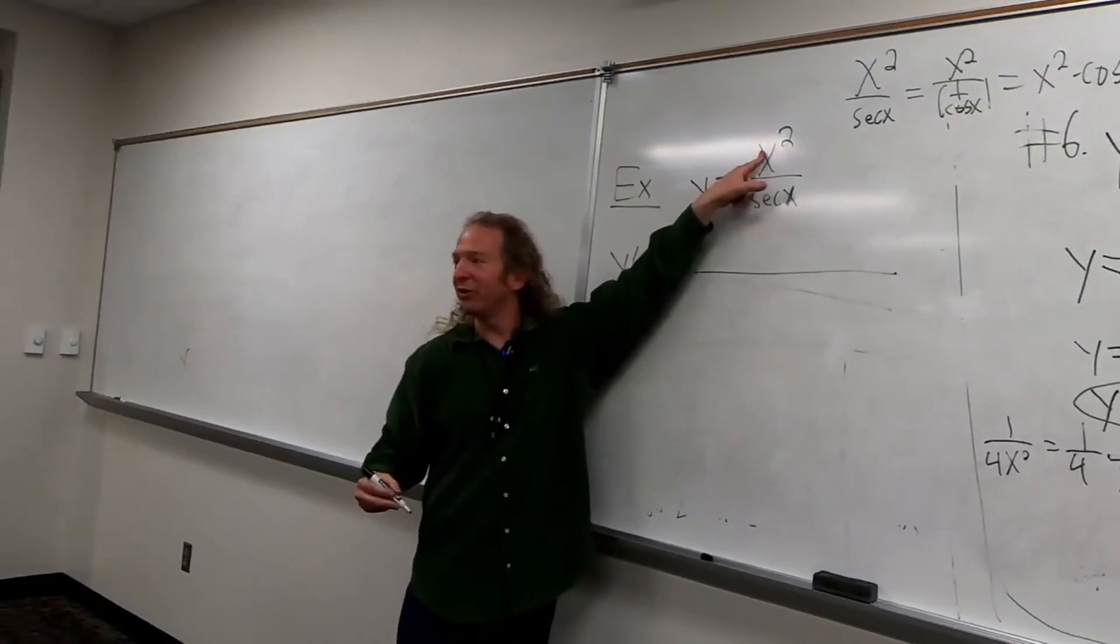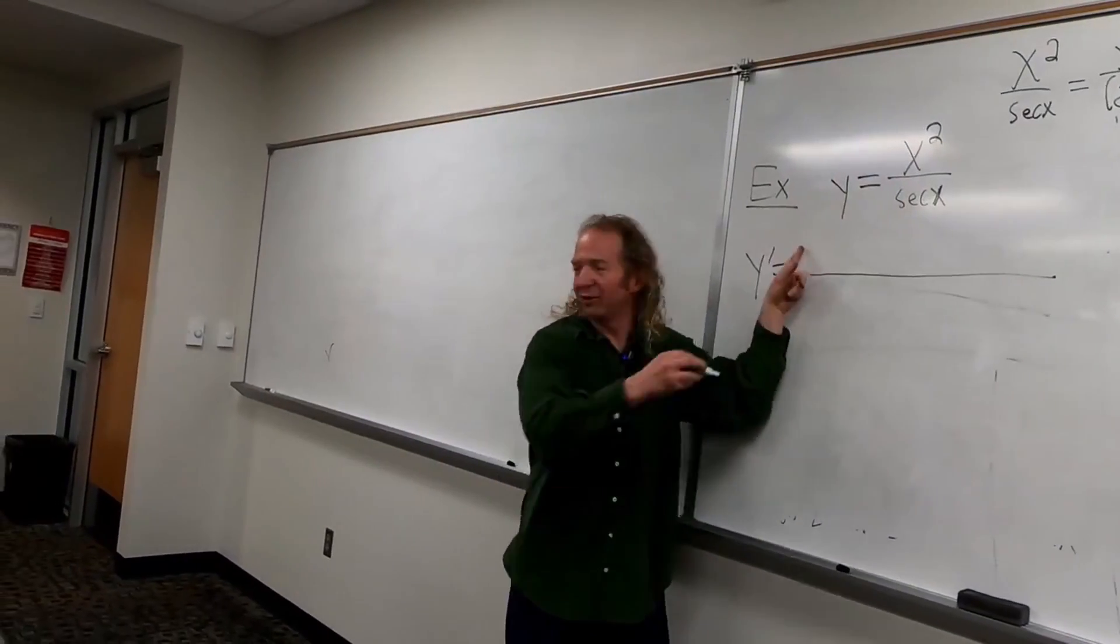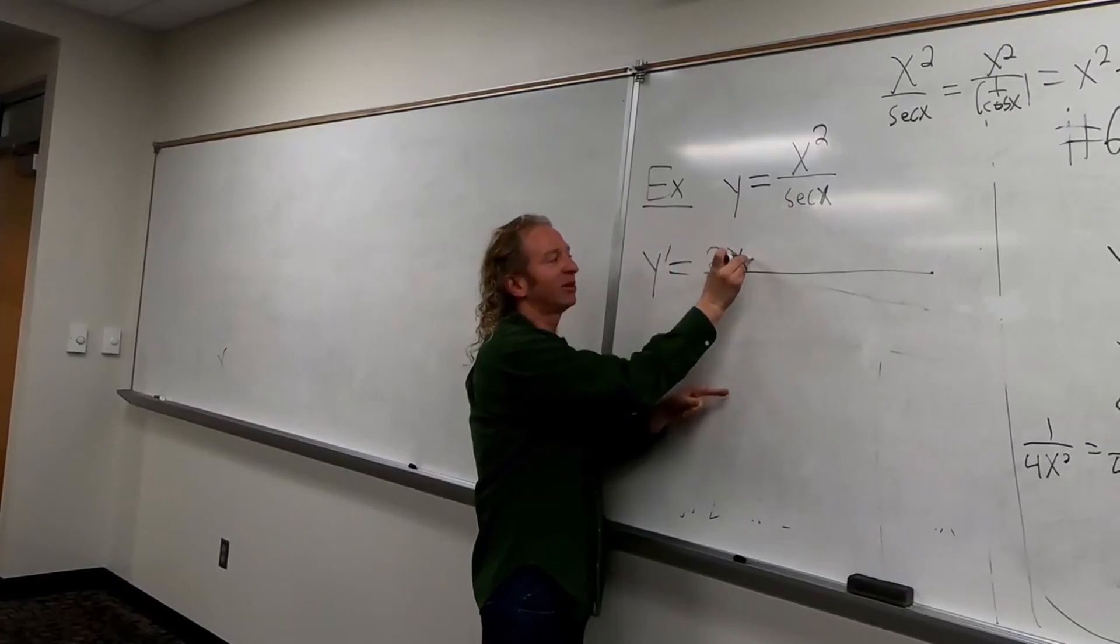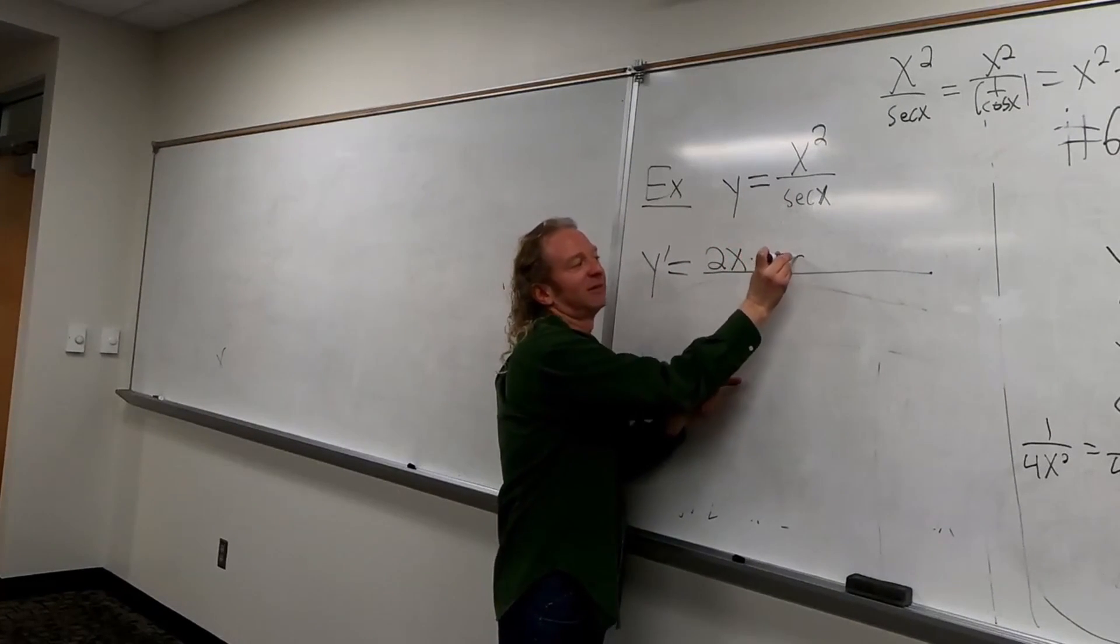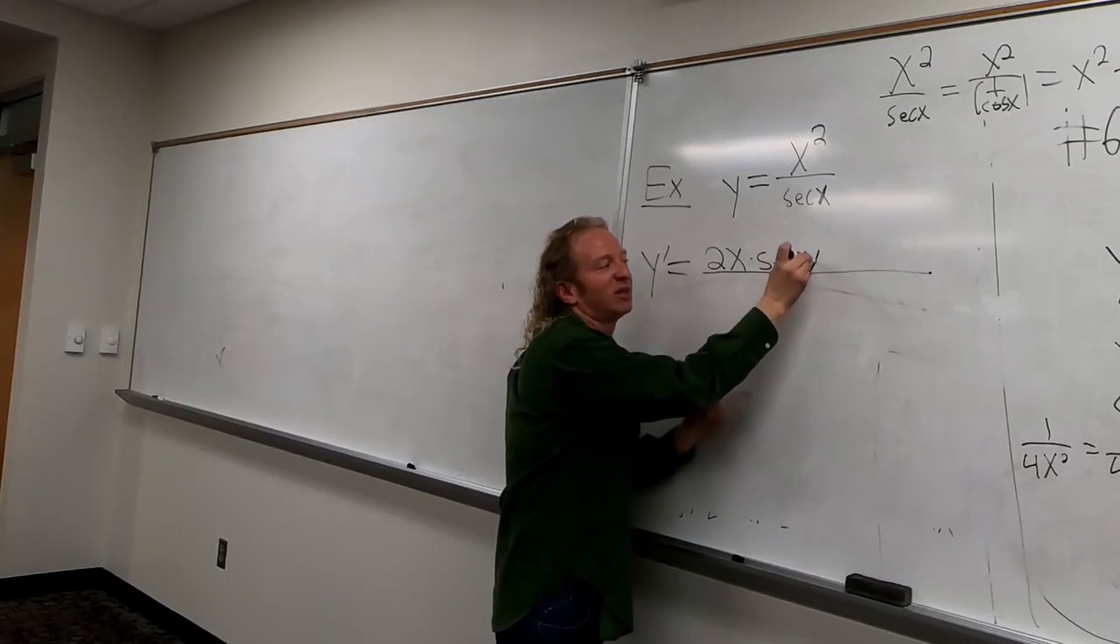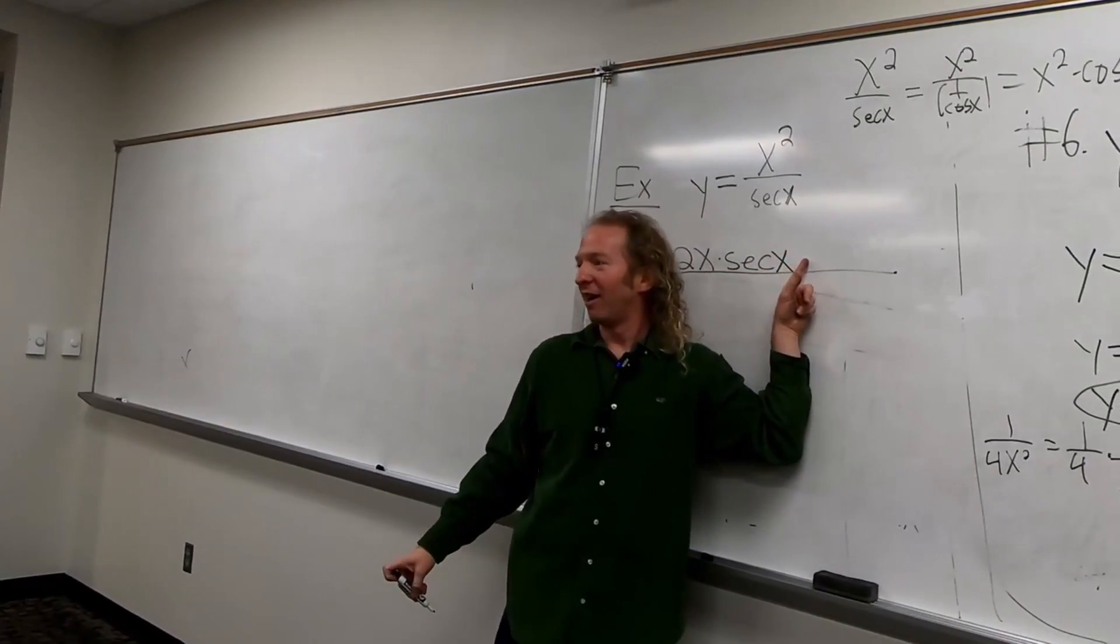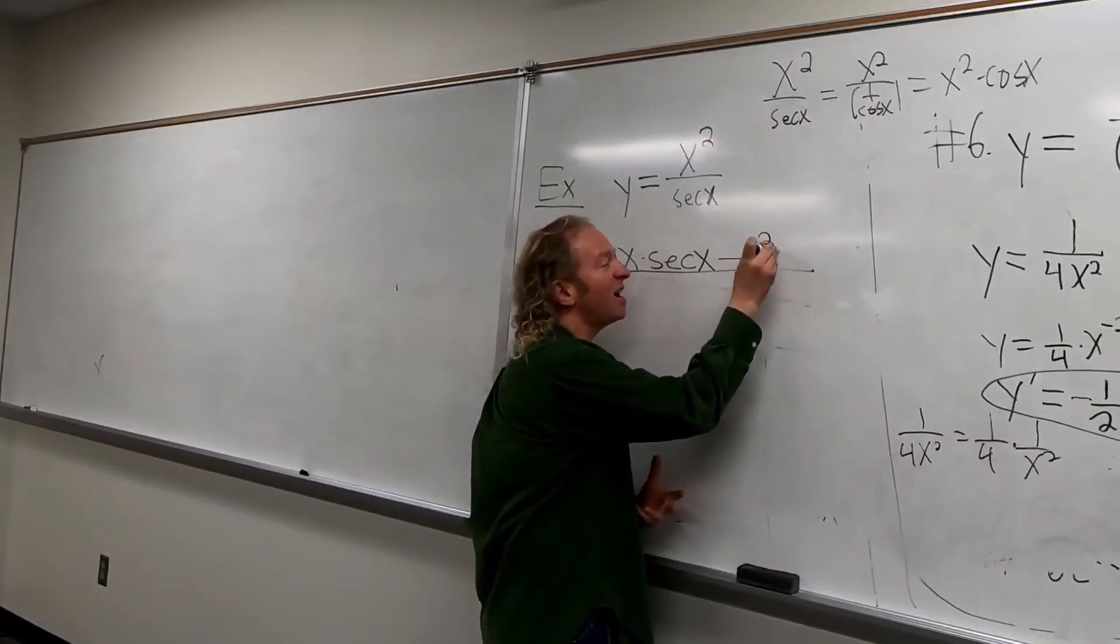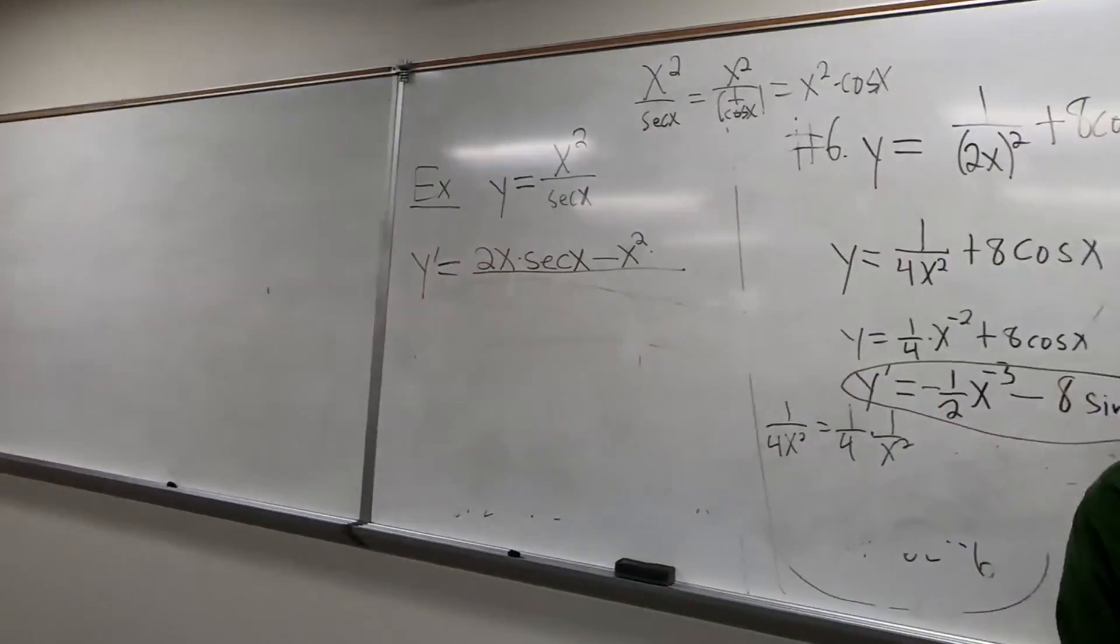So it's the derivative of the first, so 2x, right, so 2x times the second or the bottom, so secant. What's the sign here? Do you remember? Minus. Yeah, good.